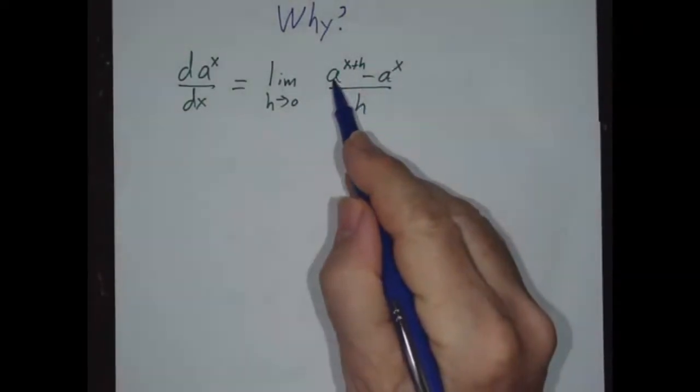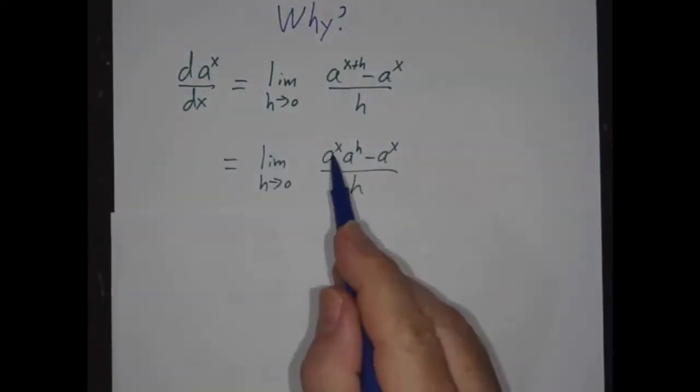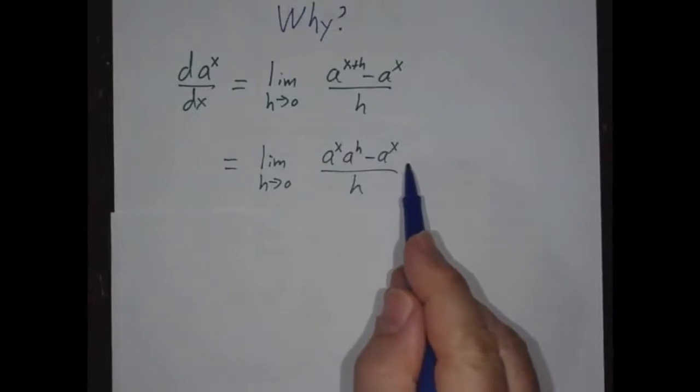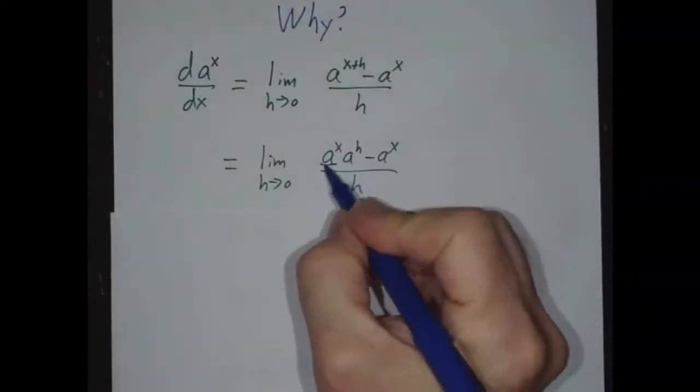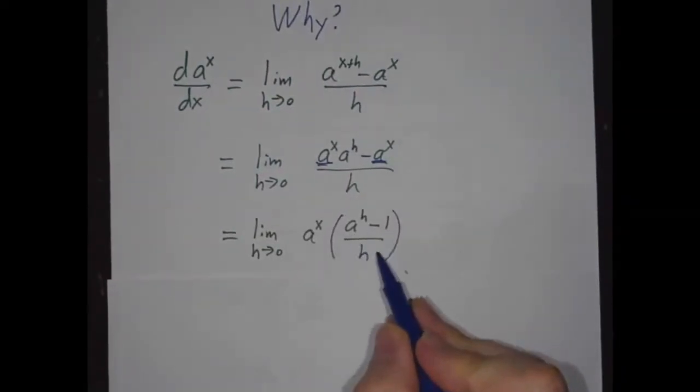But now we know the laws of exponents that a to the x plus h is a to the x times a to the h. And then we can factor out the a to the x and get a to the x times a to the h minus 1 over h.